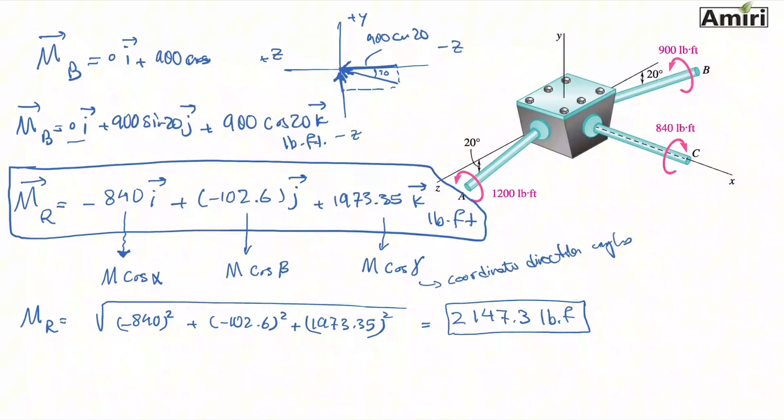I'll do the first one, you can do the beta and gamma. Cosine alpha is minus 840 pound-foot divided by 2147.3 pound-foot. From here you get alpha equals 113 degrees. You do the same for beta and gamma.